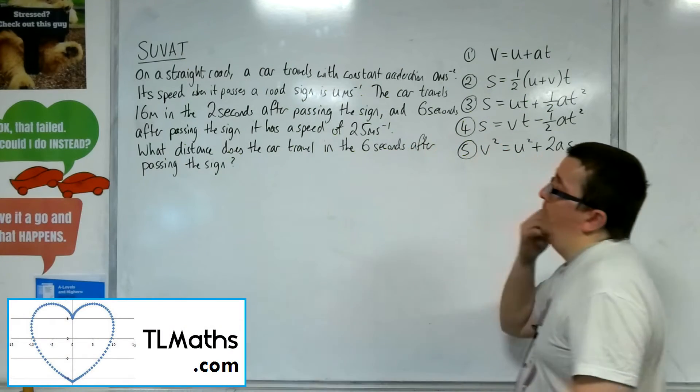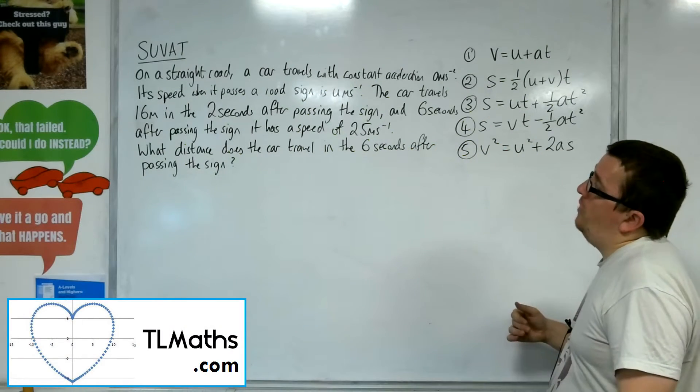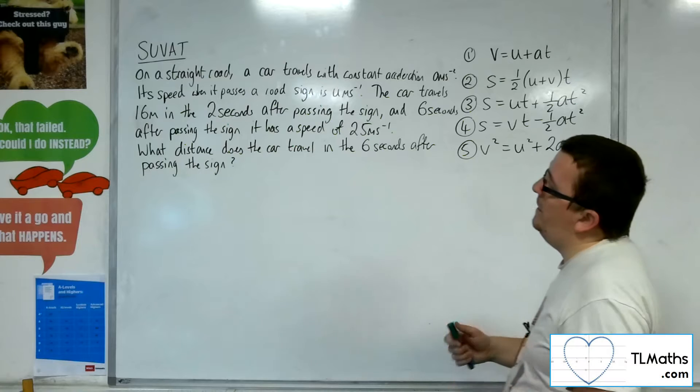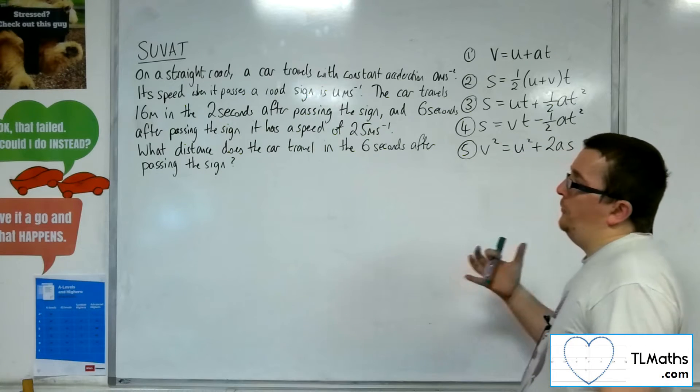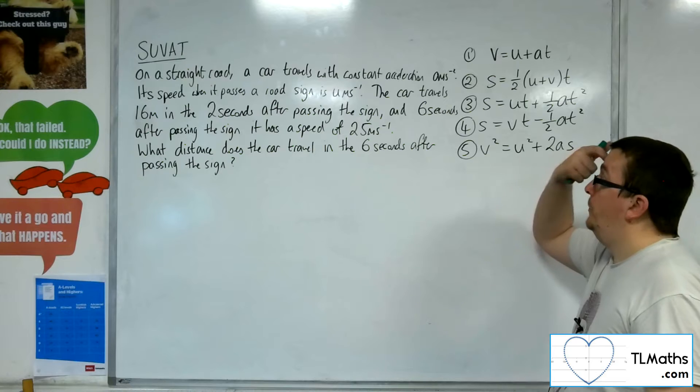So in this video we're going to look at this problem. On a straight road a car travels with constant acceleration a meters per second per second. Its speed when it passes a road sign is u meters per second.